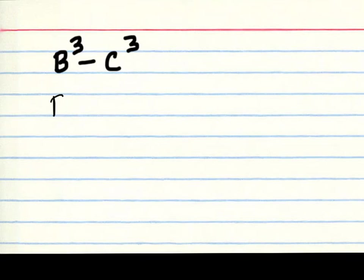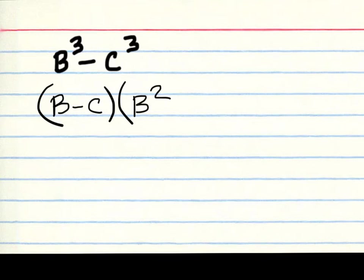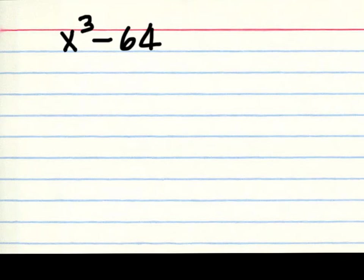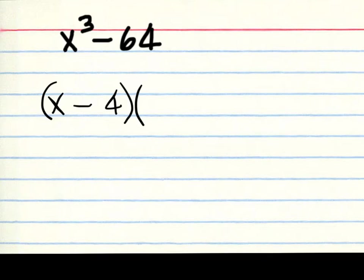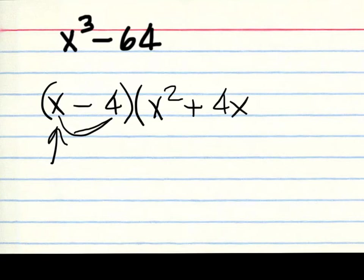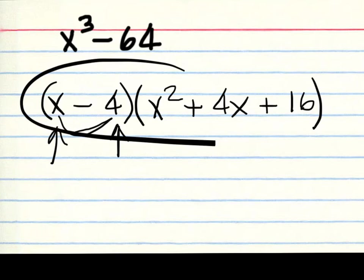The formula takes the form b minus c, times b squared plus bc plus c squared. Try this one. The cube root of x cubed is x, and the cube root of 64 is 4. So we start with x minus 4, then square x to get x squared, multiply x and 4 together to get 4x, and then square 4 on the back end to get 16. This is the answer.